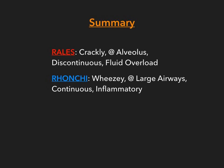Here's my summary slide. Rails are crackly noises. They occur at the level of the alveoli. They are discontinuous — if you've ever heard what the crackling noise sounds like, it's not one continuous sound. That's a rail. And it's due to fluid overload. Ronchi, on the other hand, is a wheezy type of sound. It occurs at the large airways. Remember: Ronchi at the bronchi.